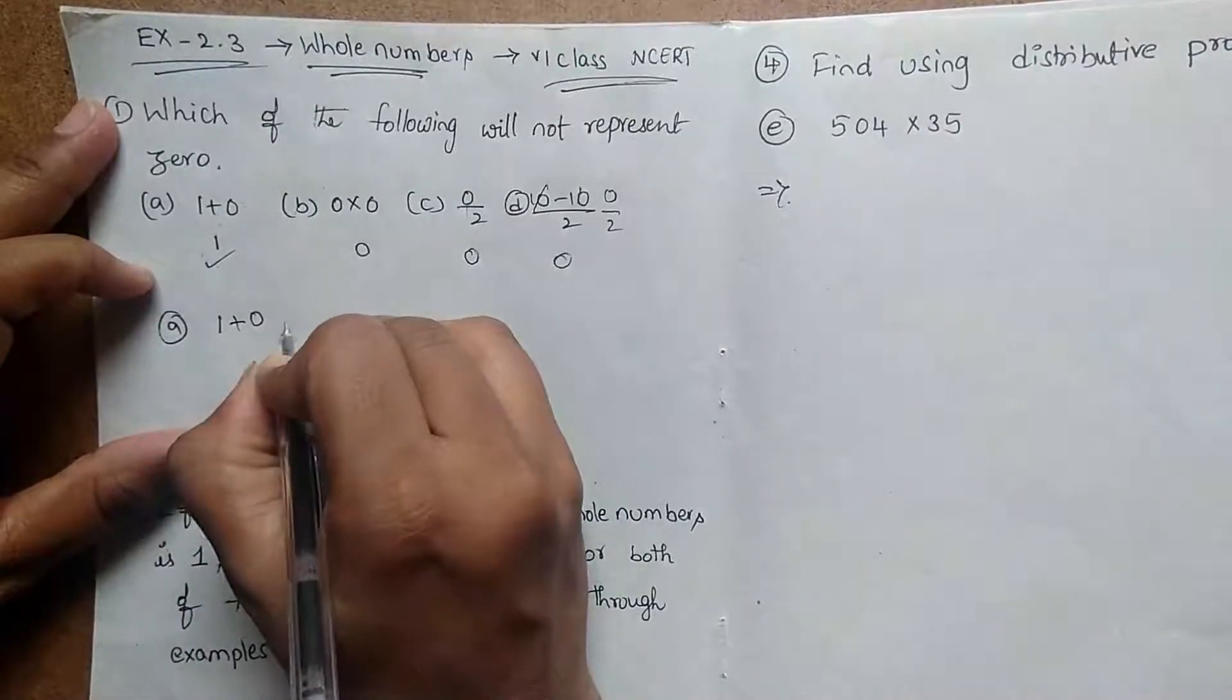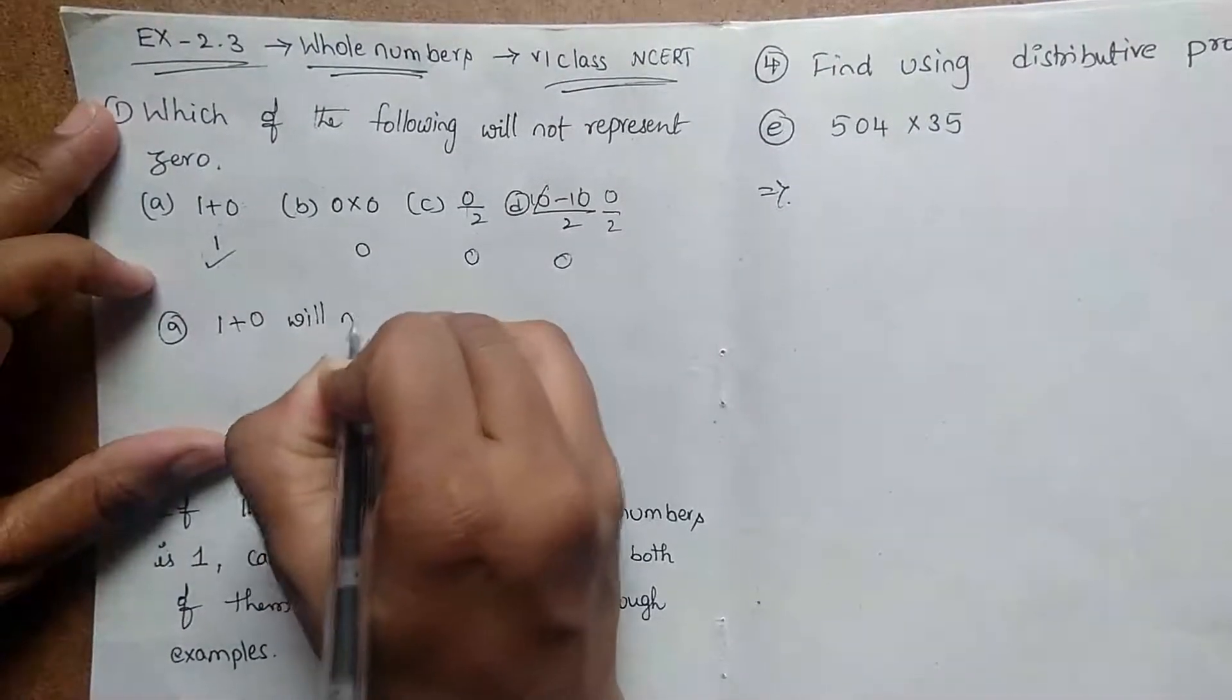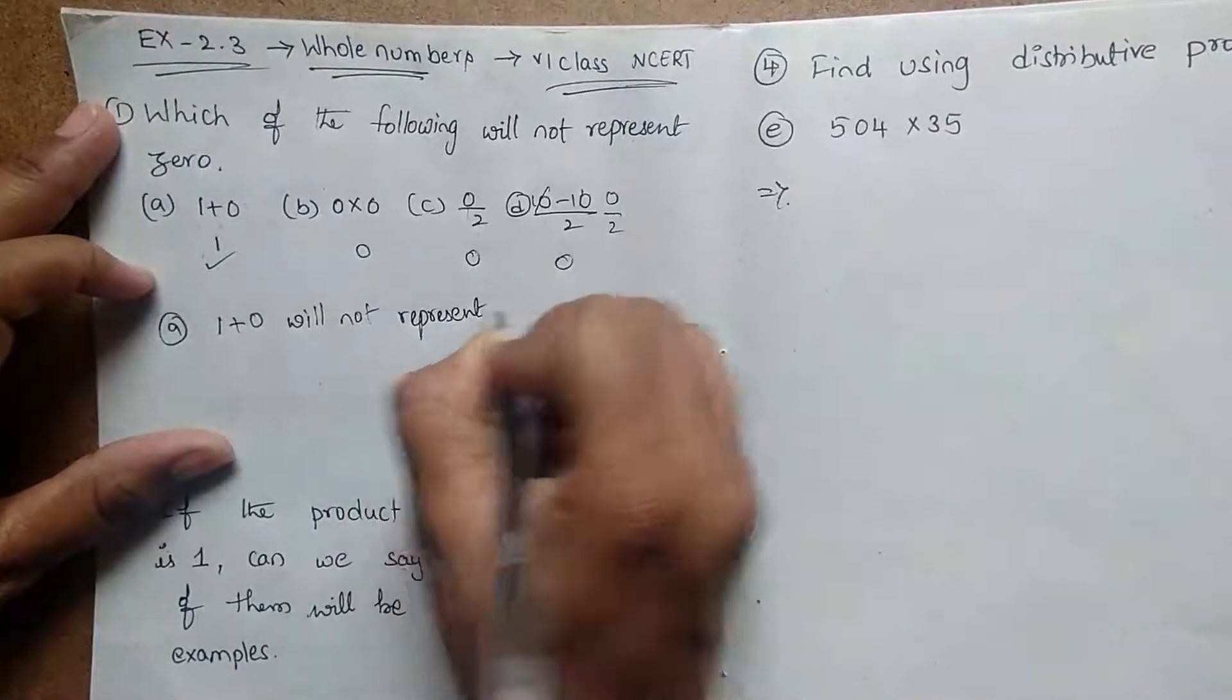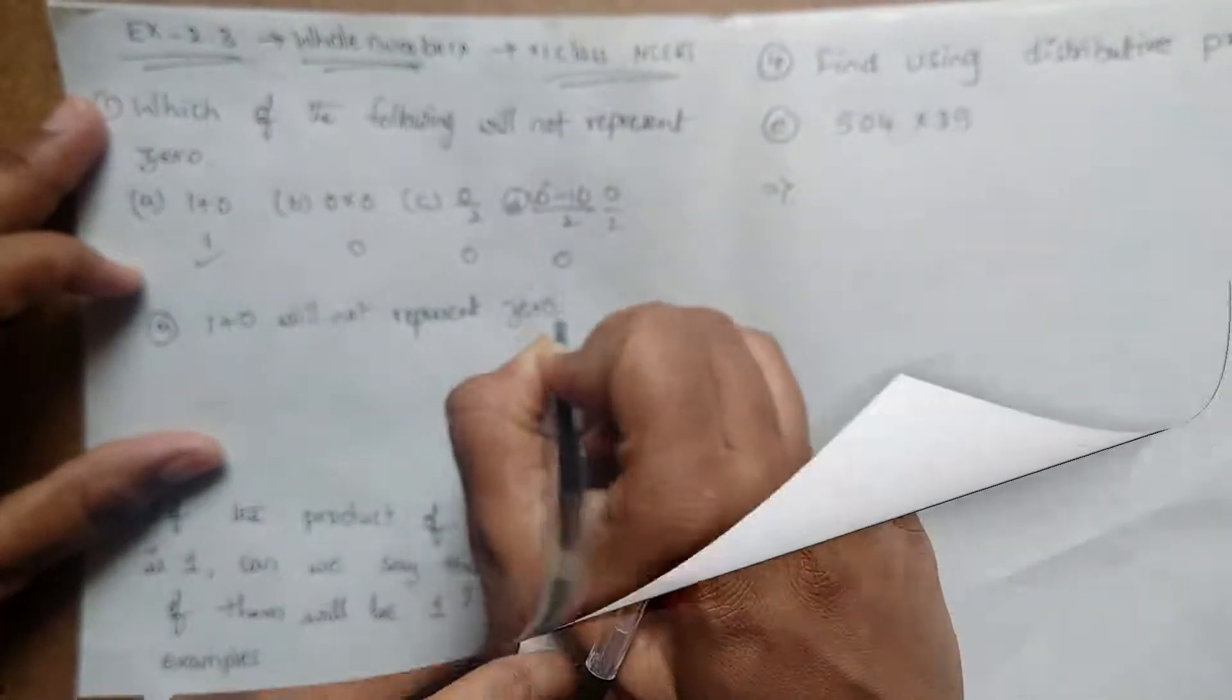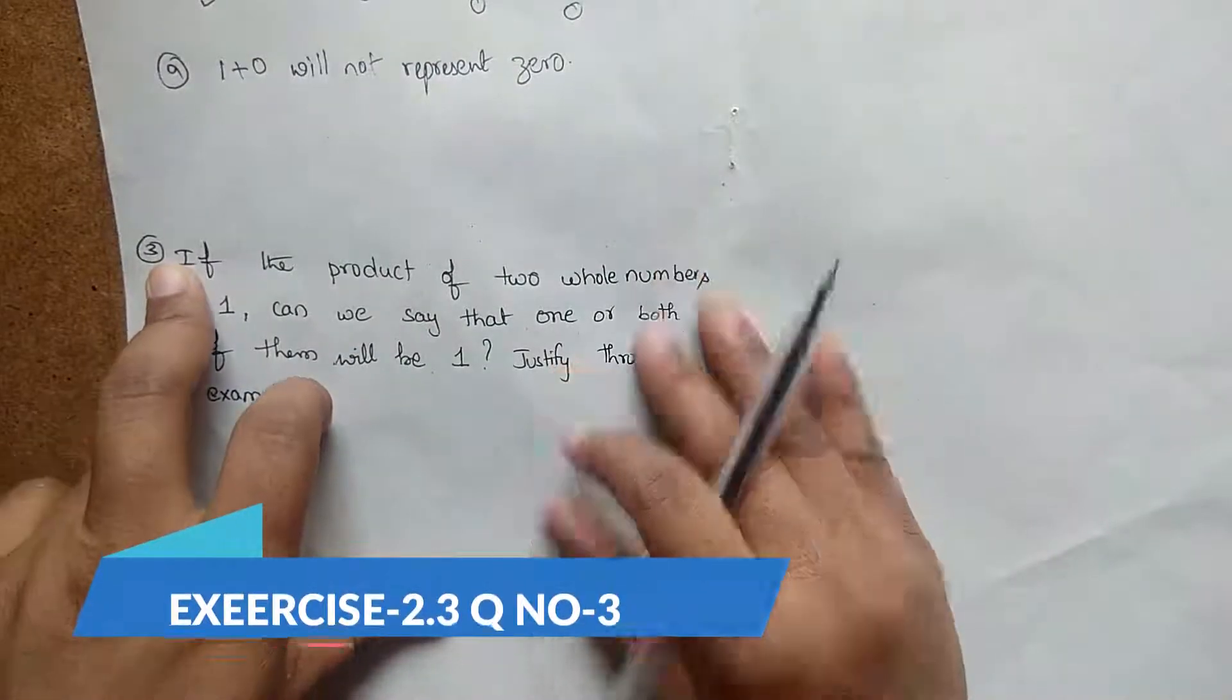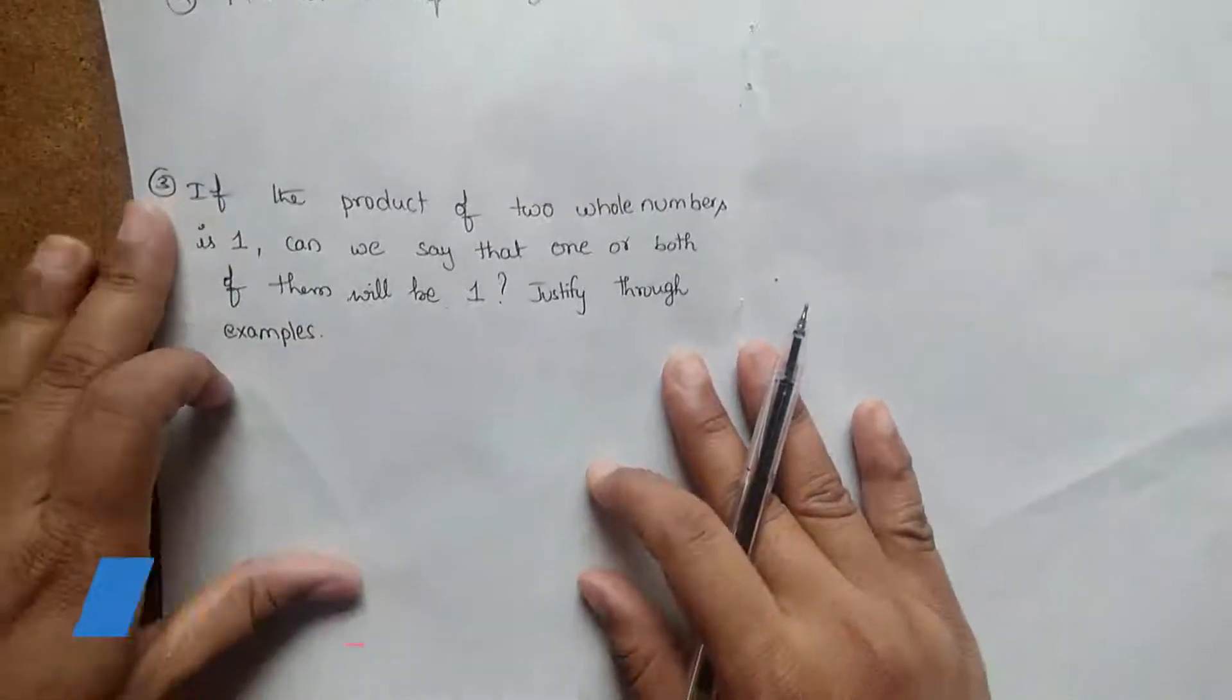Now I took another problem from Exercise 2.3, problem number 3: If the product of two whole numbers is 1, can we say that one or both of them will be 1? Justify through examples.